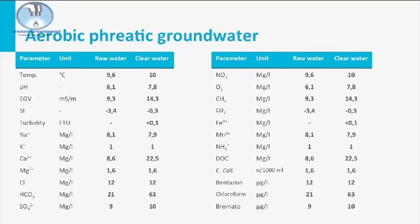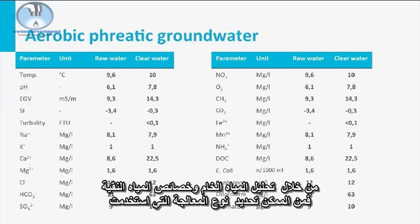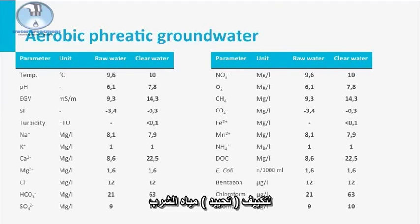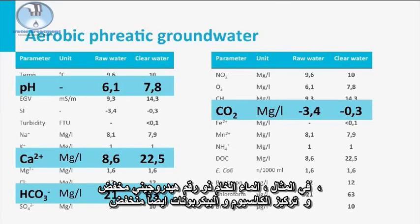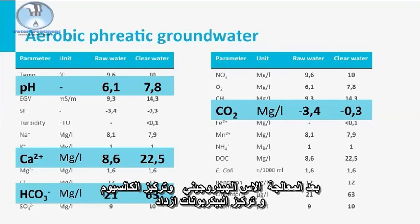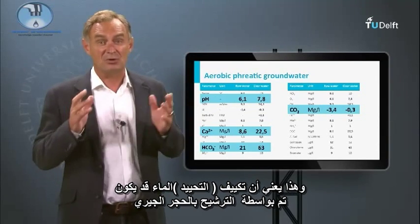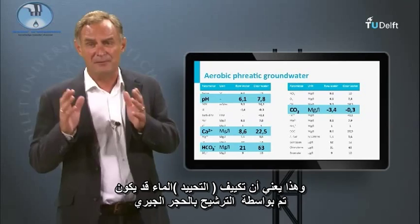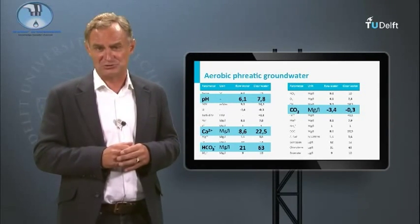From the raw water and clear water characteristics, it is possible to analyze what treatment was performed to condition the drinking water. In the example, the incoming water has a low pH and a low calcium and bicarbonate concentration. After treatment, the pH, calcium concentration, and bicarbonate concentration increased. This means that conditioning must have been performed with limestone filtration.